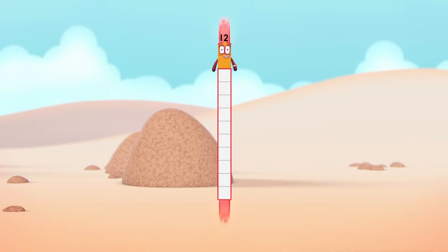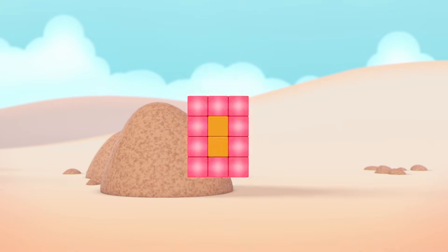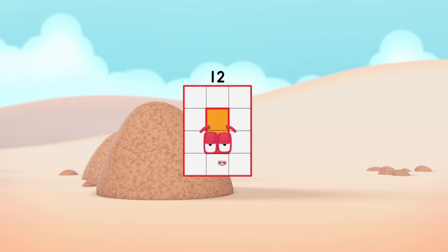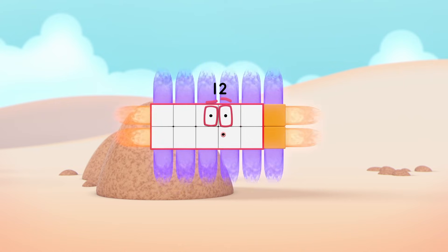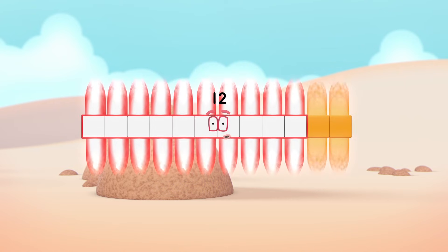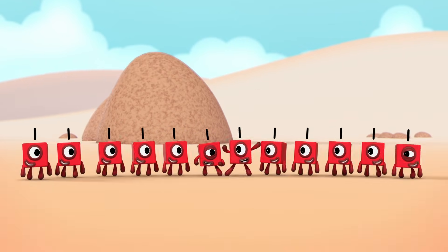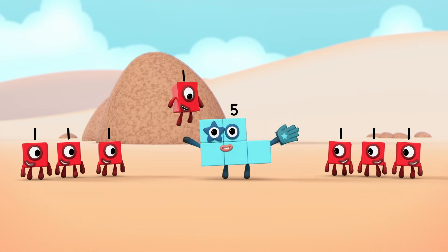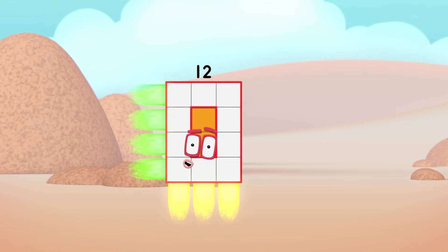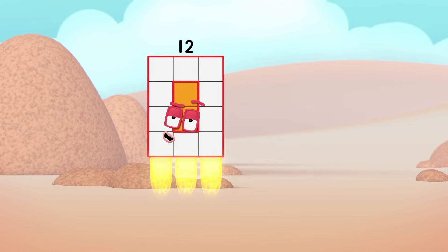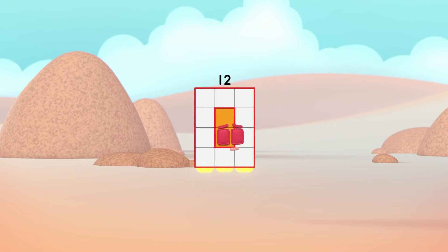Arrays away! One by twelve, switch! Two by six, switch! Three by four! Turn! Four by three! Switch! Six by two! Switch! Twelve by one! Break away! One, two, three, four, five, six, seven, eight, nine, ten, eleven, twelve! It's a new crazy turn of phrase — you'll be in a daze when you fix your gaze on my amazing array displays!